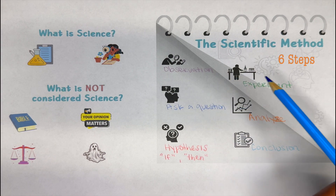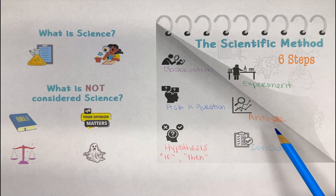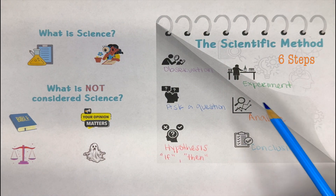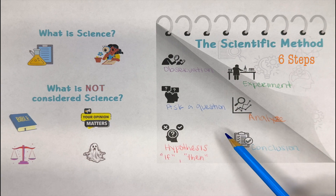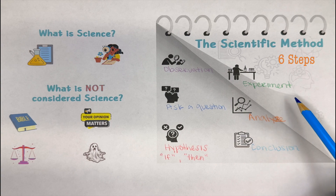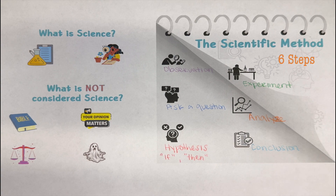So here are the six different logical processes or steps to the scientific method: observation, ask a question, hypothesis and your prediction, your experiment, analyze your results, and your conclusion. Either your hypothesis is supported or it is not supported.